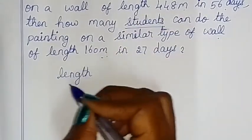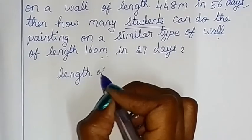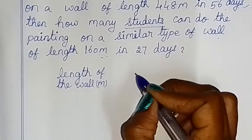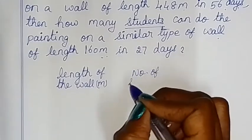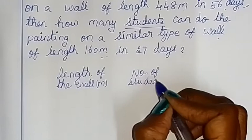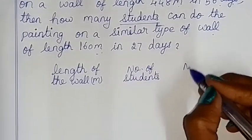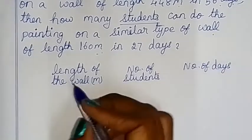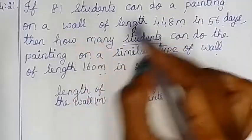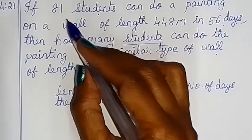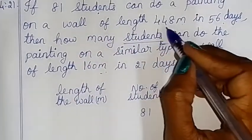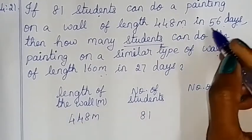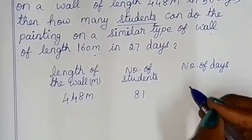The first column is the length of the wall in meters. The second column is the number of students. The third column is the number of days. Let's fill the first row: 81 students, 448 meters length of the wall, 56 days.